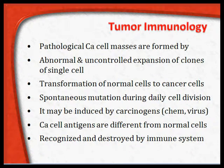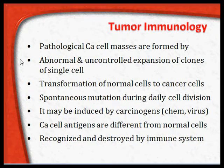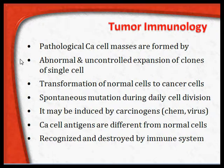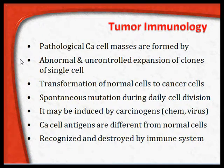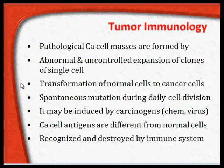Coming to tumour immunology: pathological cancer cell masses are formed by abnormal and uncontrolled expansion of clones of single cells. If one single cell mutates to form an abnormal cell and that cell multiplies uncontrollably, it can result in a cancer cell mass. Transformation of normal cells into cancer cells occurs due to de novo mutation, viruses, chemical injury, or genetic information transmitted across generations.